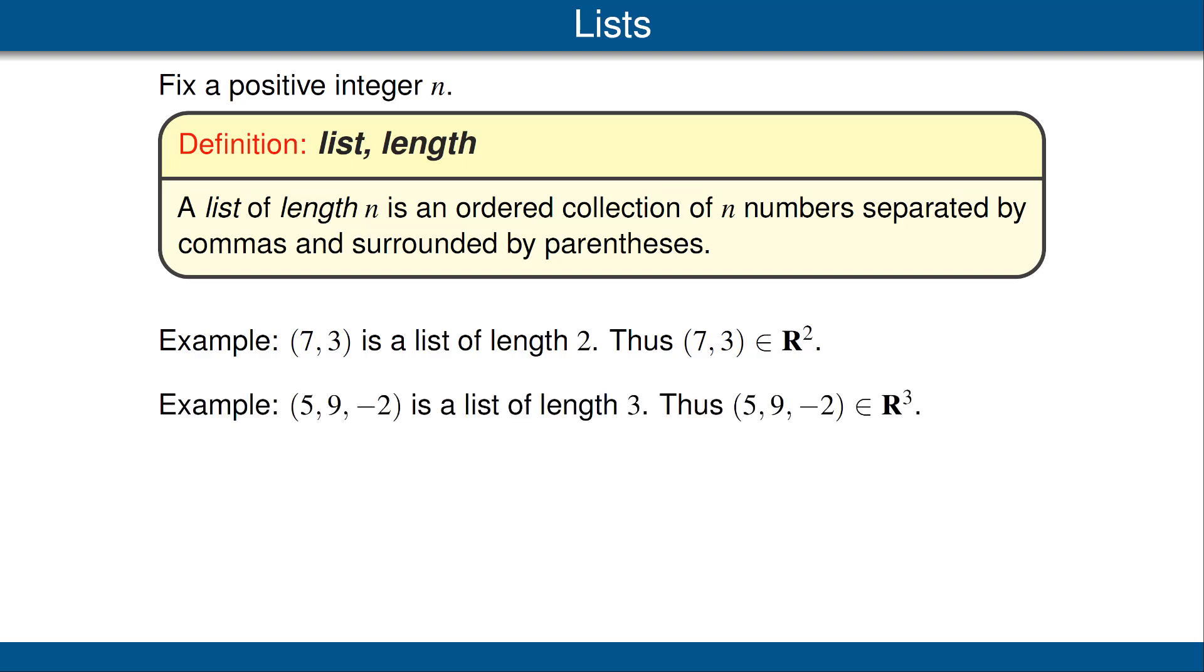As another example, (5, 9, -2) is a list of real numbers. This list has length 3. Thus, (5, 9, -2) is an element of R³, which is defined equal to the set of lists of real numbers of length 3.